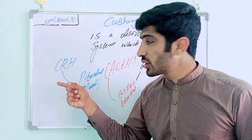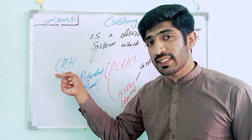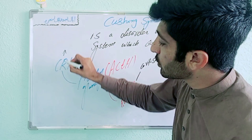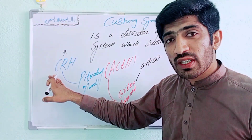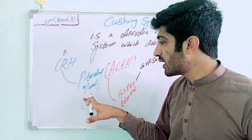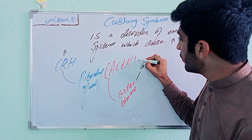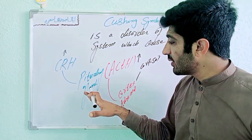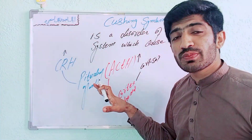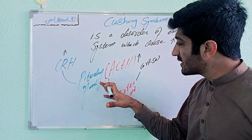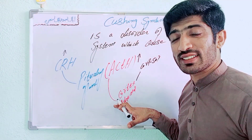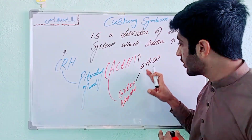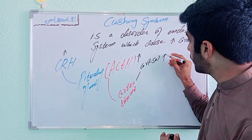So if there is a problem in the hypothalamus and an excessive amount of CRH is secreted, this excessive CRH comes to the pituitary gland and stimulates it to secrete a very large amount of ACTH. This excessive ACTH then comes to the cortex region of the adrenal gland and stimulates it to secrete cortisol also in an excessive amount.